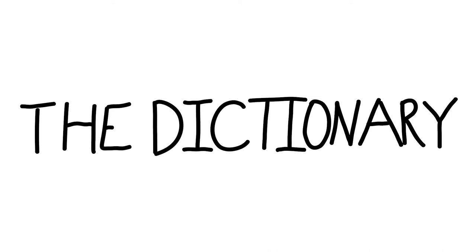Next we have aide, A-I-D-E. This is a noun from 1777: a person who acts as an assistant, specifically a military officer who acts as an assistant to a superior officer. Short for aide-de-camp, A-I-D-E dash D-E dash C-A-M-P. That is a noun from 1670: a military aide, also a civilian aide usually to an executive. From French, it literally means camp assistant.